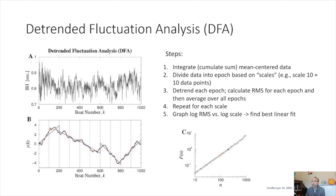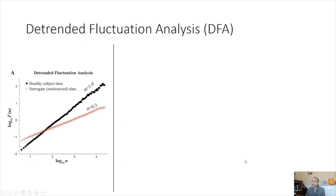You then average all the root mean squared values across all epochs, and repeat this for different scales. You get a relationship of fluctuation versus scale that produces a linear relationship. A healthy DFA relationship has an alpha of 1.0, whereas an unhealthy one — simulated by randomizing the data to produce significant white noise — has an alpha of 0.5.